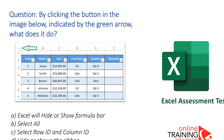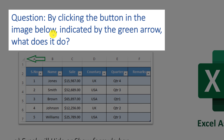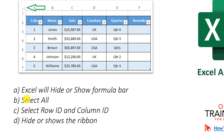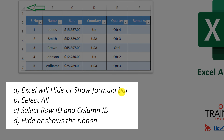Very frequently during an Excel assessment test, you might be presented with a question like this, which tests your knowledge of Excel formatting shortcuts. The question asks: by clicking the button in the image below, indicated by the green arrow, what will happen? The four choices are: Excel will hide or show the formula bar, select all, select row ID and column ID, or hide or show the ribbon.